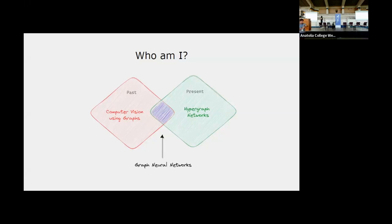Francesco already nicely introduced me, but I'm just going to say a few more words about myself to give a bit of context. After uni, I started working as a machine learning researcher at BDefender, which is a Romanian company, working mainly on computer vision using graphs. Currently, I'm a PhD student working on hypergraph neural networks at the University of Cambridge. Today, I'm going to talk about the topic at the intersection between my present and past interests, namely graph neural networks.